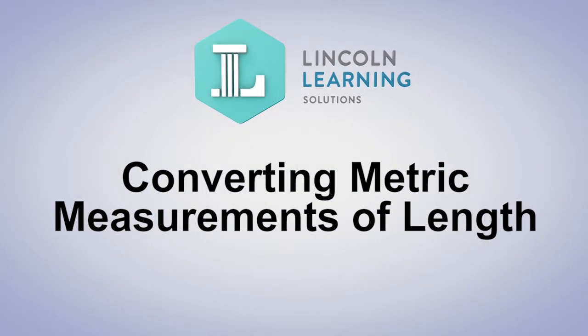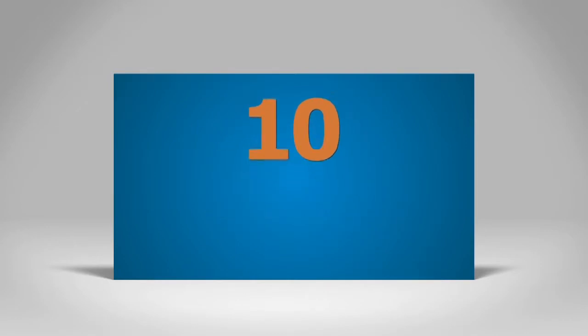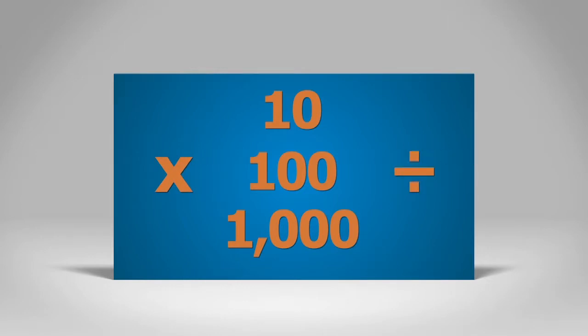There are two systems of measurement, the U.S. standard system and the metric system. The metric system is based on the number 10. This means that all of its units can be converted by either multiplying or dividing by multiples of 10.